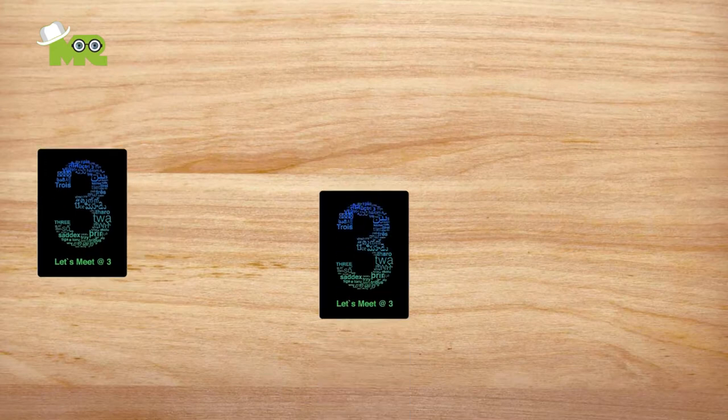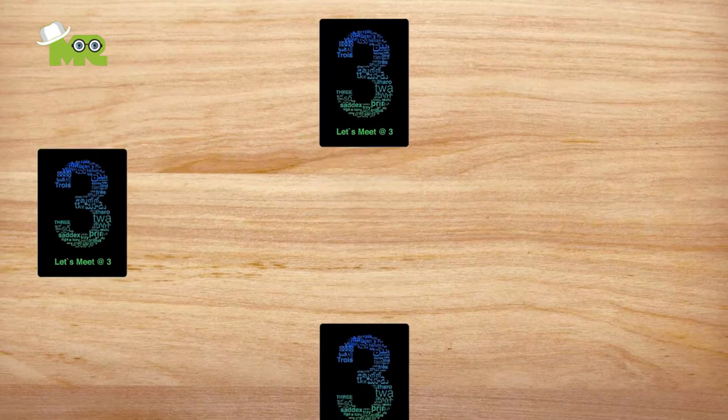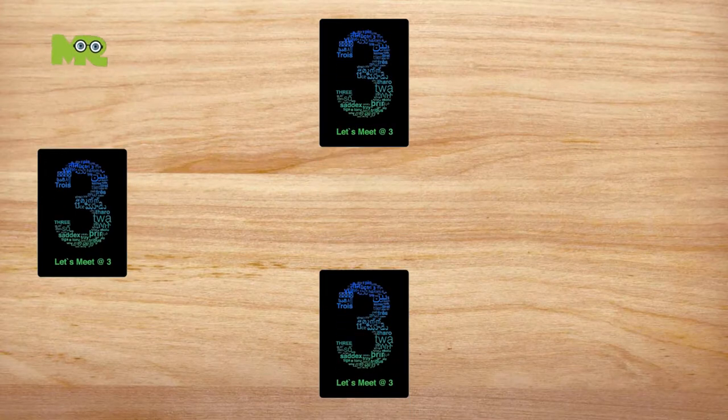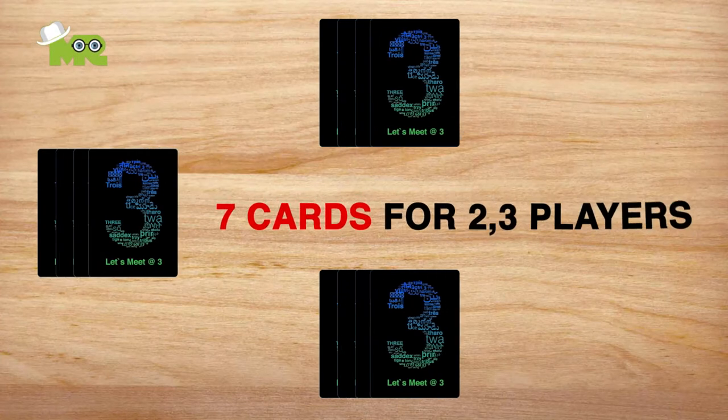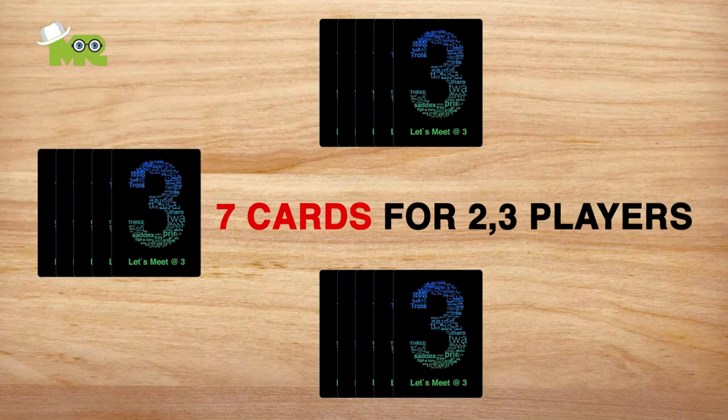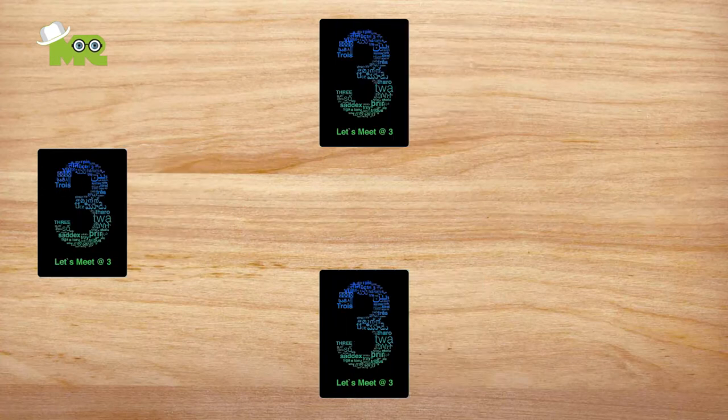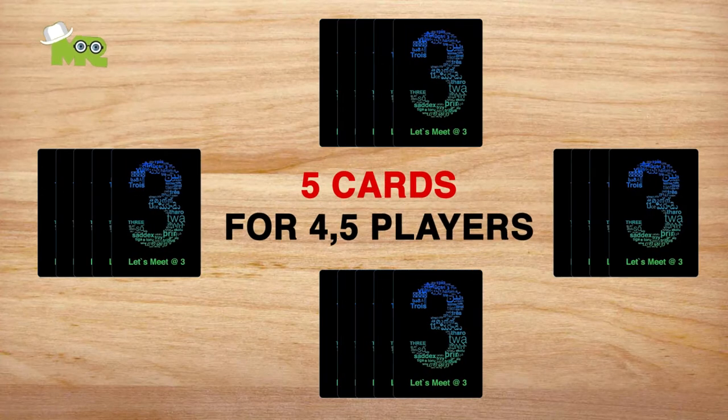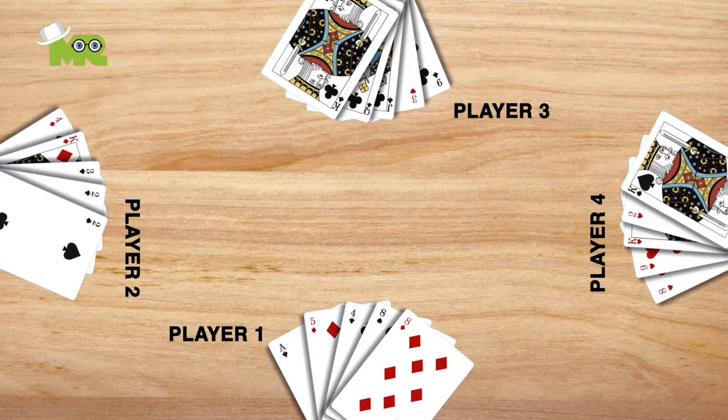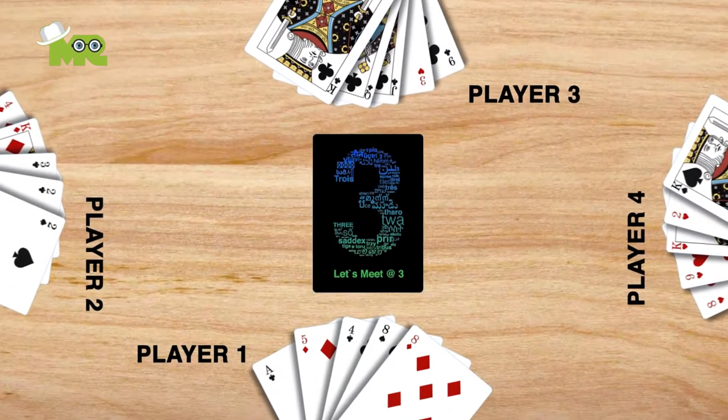Fourth, the dealer starts dealing the cards clockwise one at a time face down beginning with the player to the left. Each player receives seven cards if two or three people are playing, or five cards if four or five people are playing. The stock consists of the remainder of the pack, placed face down on the table.